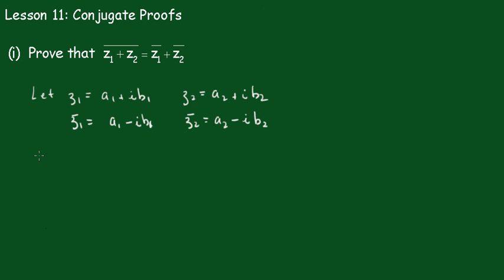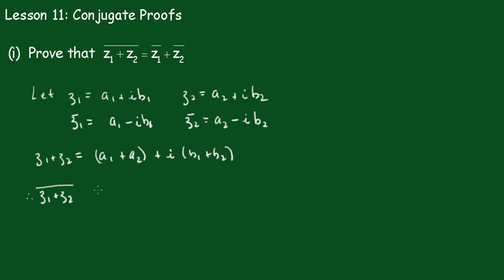Now Z1 plus Z2 will be equal to A1 plus A2 plus i(B1 plus B2), just adding these two together and rearranging. Therefore the conjugate of Z1 plus Z2 will be equal to A1 plus A2 minus i(B1 plus B2).